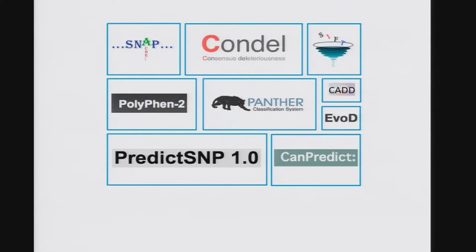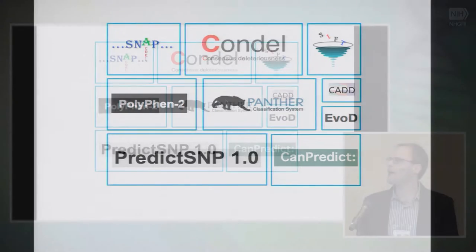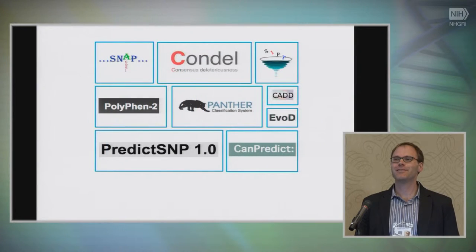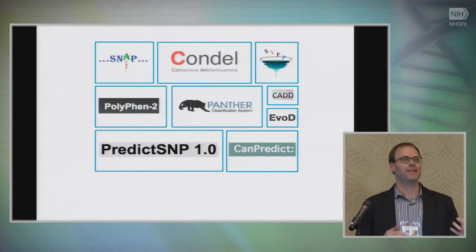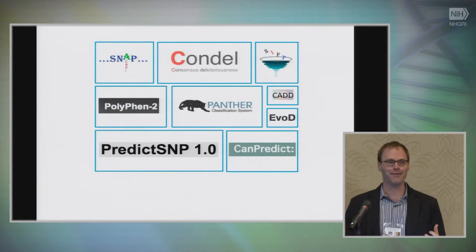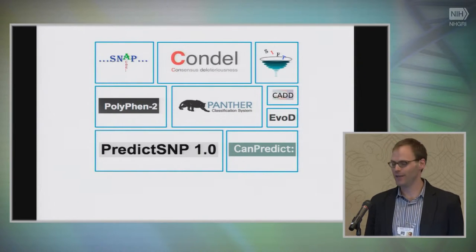That brings me to what I wanted to tell you about today: prediction of variant effect. These are just some variant effect predictors I'm sure you're familiar with. In this crowd, they get pilloried for not being very accurate, yet they also get used in most papers I read, so it's a bit of a love-hate relationship. To me that represents an opportunity — something that everybody uses but nobody really loves is maybe an opportunity.